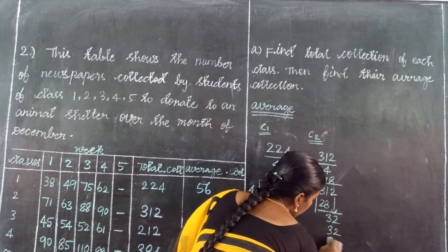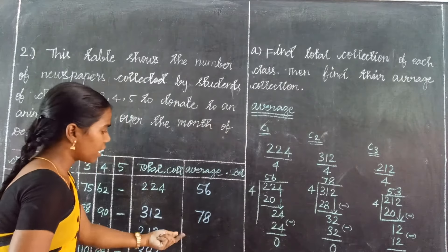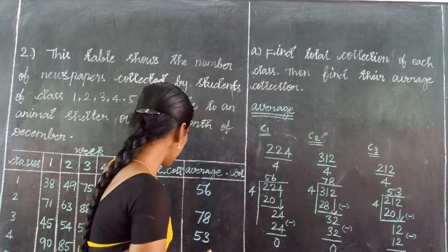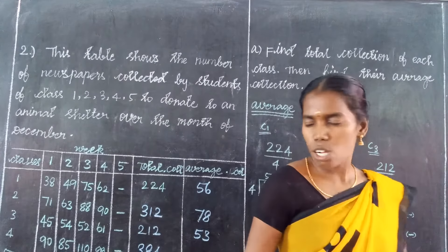The Class 2 average is 78. Then Class 3: the total value is 212, divided by 4. Consider the first 2 digits: 21. Five 4s are 20, so 21 minus 20 leaves 1. Bring down 2 to get 12. Three 4s are 12, so 12 minus 12 equals 0. The Class 3 average is 53.